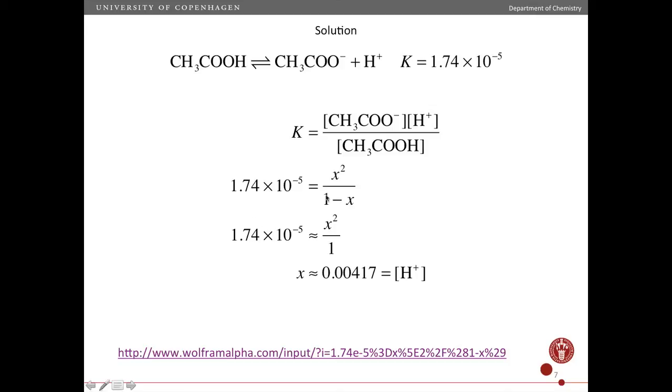So if we start with one molar acetic acid, and we take one of these molecules and break them up into ions, then for every ion we make, x, we have to subtract that from 1. So you have x here, x here, and 1 minus x here. So x times x is x squared, and 1 minus x on the denominator.